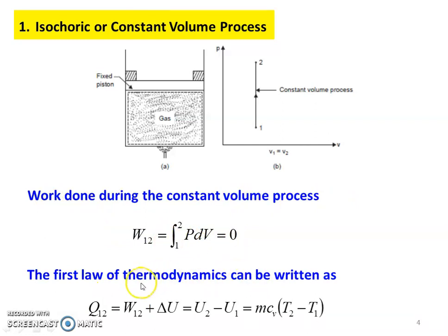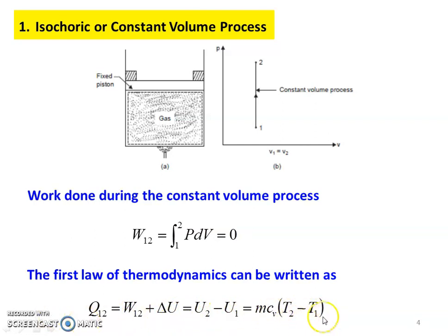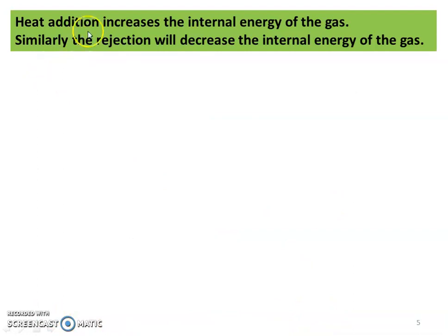Applying the First Law of Thermodynamics: Q12 = W12 + ΔU. Since W equals 0, ΔU = U2 − U1 = MCv(T2 − T1), therefore Q12 = MCv(T2 − T1). Heat addition increases the internal energy of the gas; similarly, heat rejection decreases the internal energy of the gas for a constant volume process.